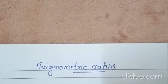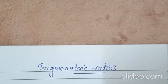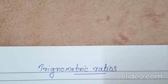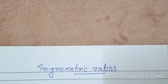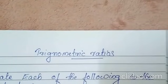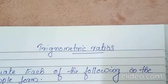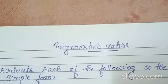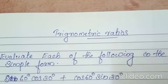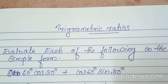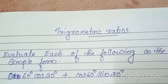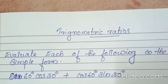So first of all we are going to evaluate each of the following in the simplified form. The first question is: sine 60 degree cos 30 degree plus cos 60 degree sine 30 degree.